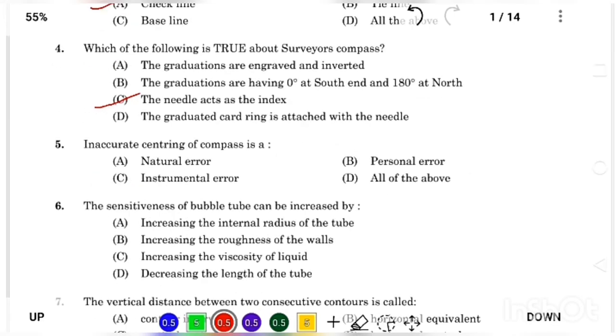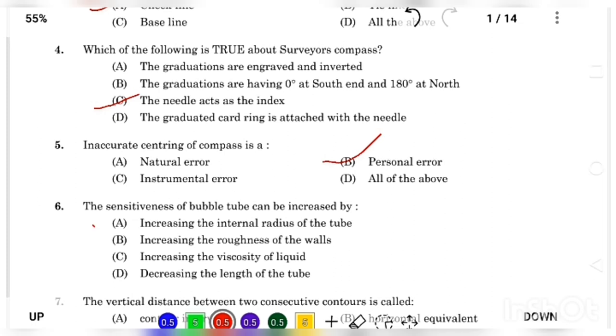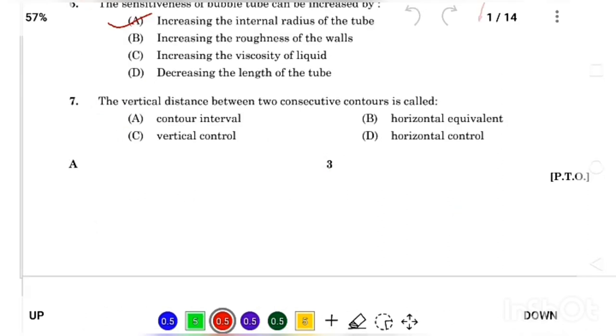Inaccurate centering of compass is Answer Option B, personal error. The sensitiveness of bubble tube can be increased by Answer Option A, increasing the internal radius of tube. The vertical distance between two consecutive contours is Answer Option A, contour interval.